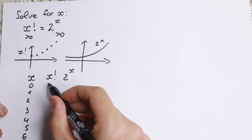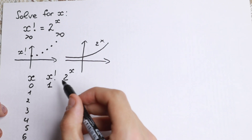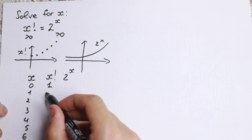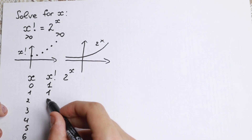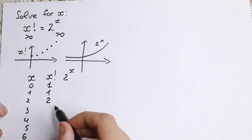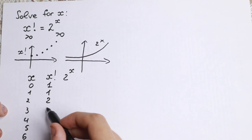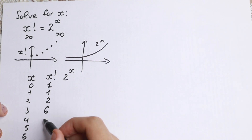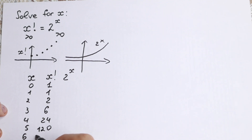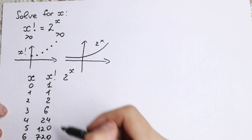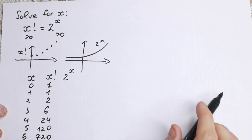Let's find these values. 0 factorial is 1, 1 factorial is 1, 2 factorial is 2, 3 factorial is 6, 4 factorial is 24, 5 factorial is 120, and 6 factorial is 720. These are the values of x factorial.